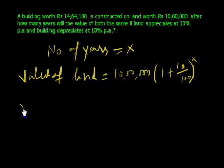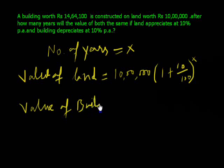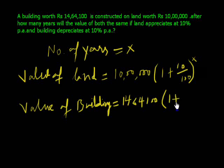Now value of building after x years is 14,64,100 times (1 plus r divided by 100) where r is 10. This is a depreciation rate, so time will be decreased - the exponent is minus x.